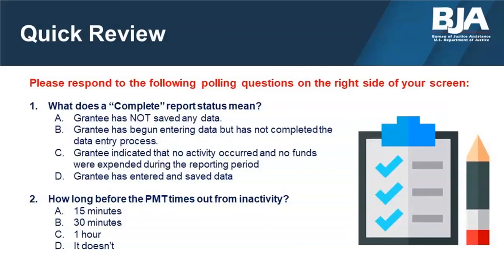Please answer the polling questions on the right side of your screen. Number one: what does a complete report status mean? A. The grantee has not saved any data. B. The grantee has begun entering data but has not completed the data entry process. C. The grantee indicated that no activity occurred and no funds were expended. Or D. The grantee has entered and saved data. Number two: how long before the PMT times out from inactivity? A. 15 minutes. B. 30 minutes. C. One hour. Or D. It does not.